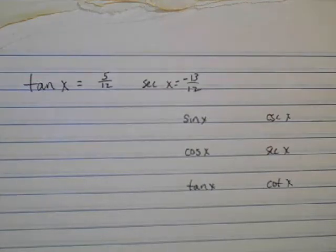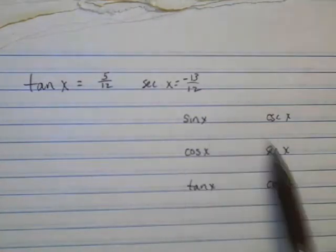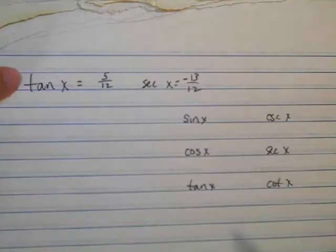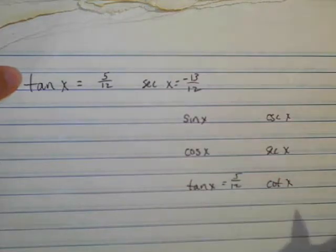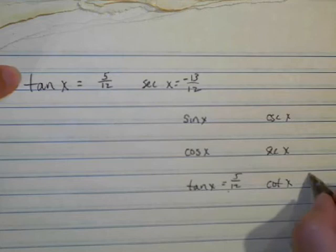All right, here's another example where we're given something, and we want to find all six trig functions. So since I'm given tangent, I know that one. And if I know tangent, I know cotangent because it's the reciprocal.